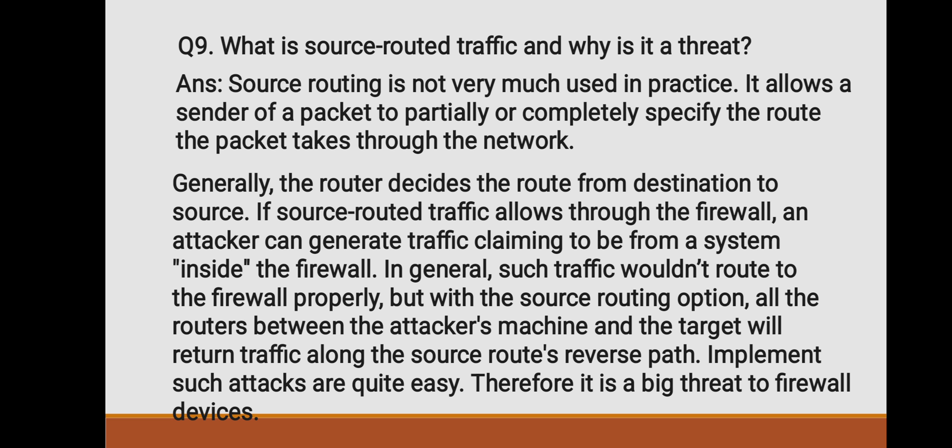What is source-routed traffic and why is it a threat? Source routing is not very much used in practice. It allows a sender of a packet to partially or completely specify the route the packet takes through the network. Generally, the router decides the route from destination to source. If source-routed traffic is allowed through the firewall, an attacker can generate traffic claiming to be from a system inside the firewall. With the source routing option, all routers between the attacker's machine and the target will return traffic along the source route's reverse path.